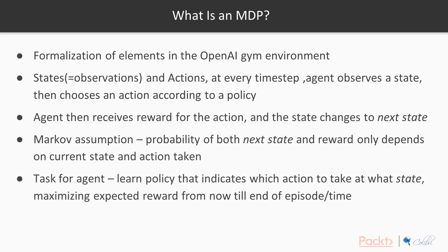You might recall that in the first section, we talked about the loop between agents and environments. An MDP consists of states, and specifically states are also equal to observations. For example, in CartPole, if the pole is in a particular position and angle, that counts as a state. If the angle changes, that's a new state. Or in GridWorld, if the square you're in is index 1 and you go to index 2, then that's a different state.